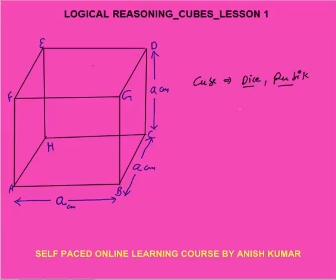Length, breadth as well as height are all the same. As you can see in our cube, the length is 'a' centimetres, breadth is also 'a' centimetres, and the height is also 'a' centimetres.